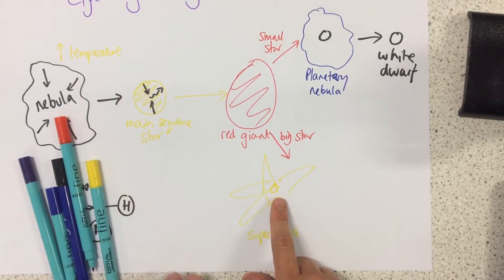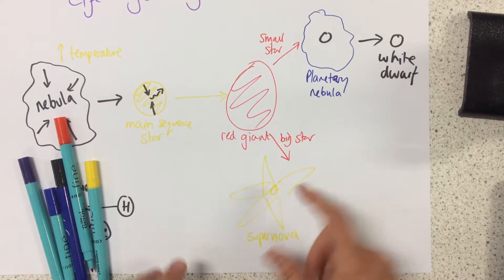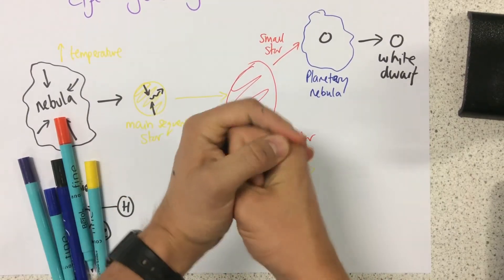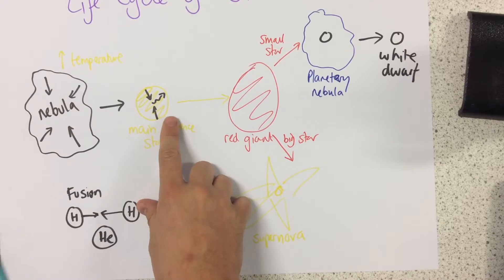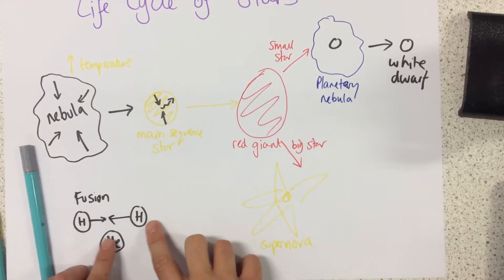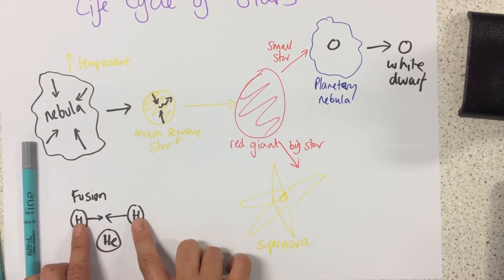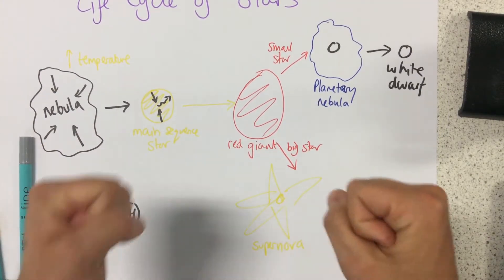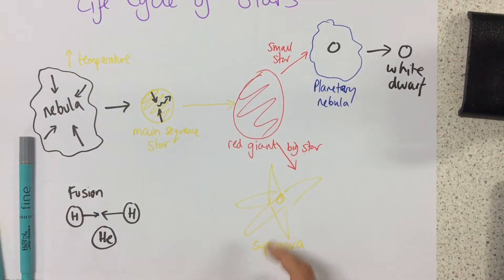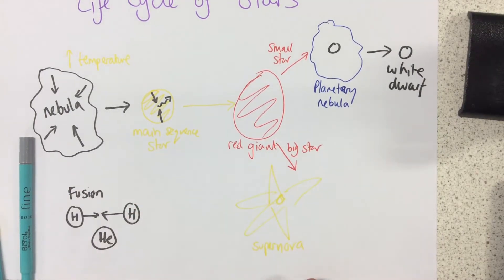There's so much energy here in a supernova that it actually fuses bigger elements together. In our main sequence star, the only elements that we could fuse together were hydrogen, which are really small and simple atoms, whereas in a supernova we could fuse together much bigger atoms to make bigger elements such as gold.